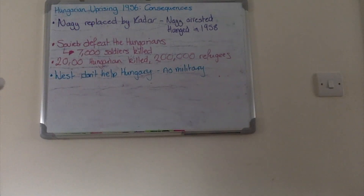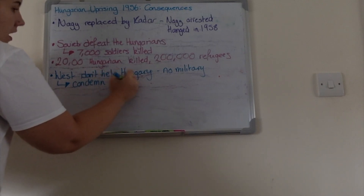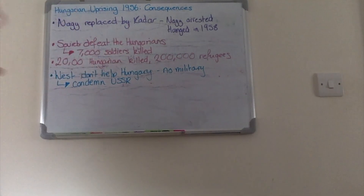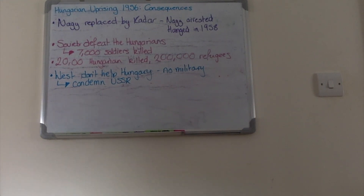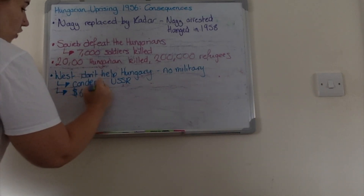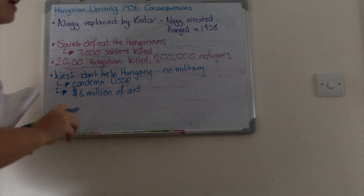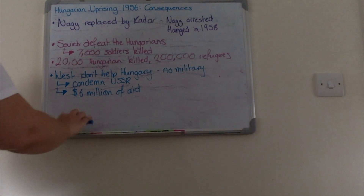The West are in a bit of an awkward position in that they can't really help the Hungarians with military forces, because that would start World War III. They are able to do one thing — which is really no help to the Hungarians — and that is condemn the actions of the USSR. They also raise six million dollars of aid in public fundraisers. But they can't provide any military support. The last words on the radio from the Hungarians were 'help, help.' They do condemn the USSR, but they can't do anything more than that because it would start another war.